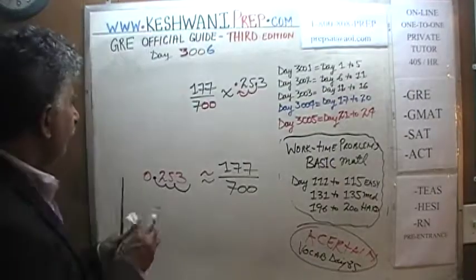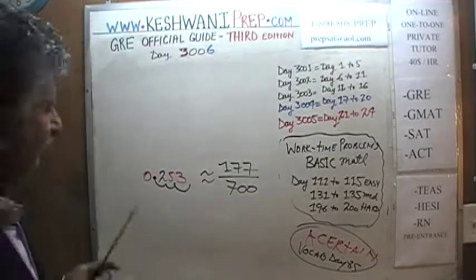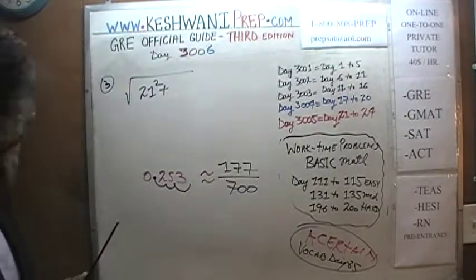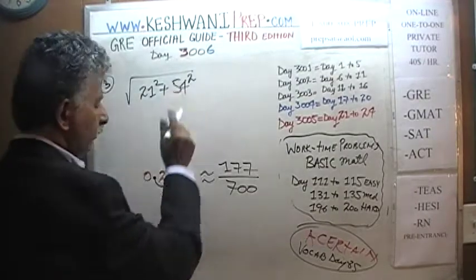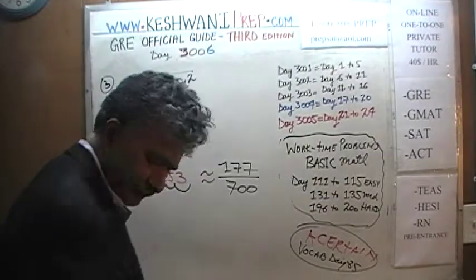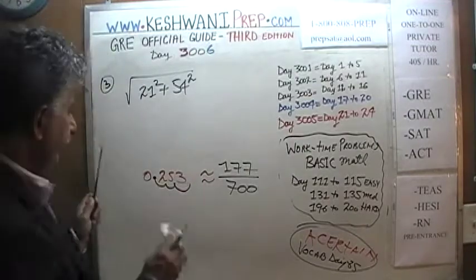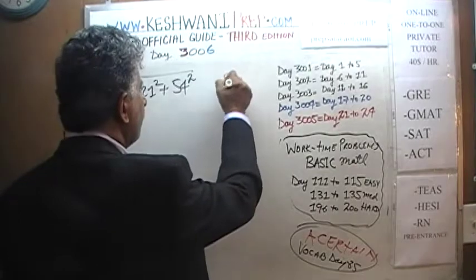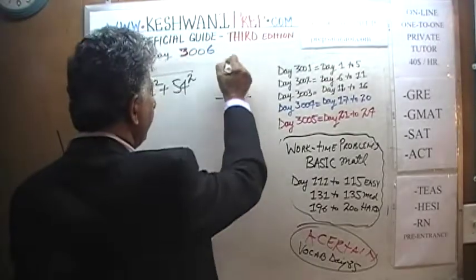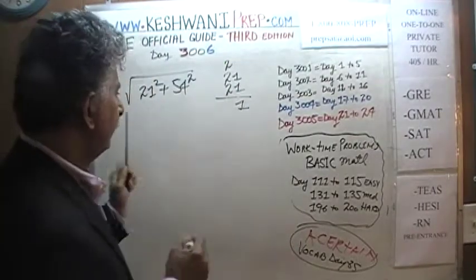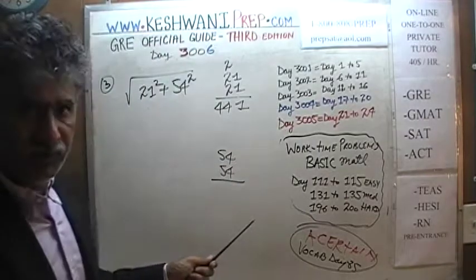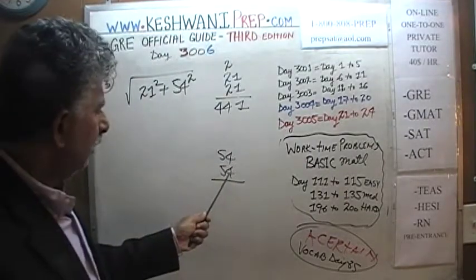Let's carry on. Number 3: they're asking us to find the square root of 21 squared plus 54 squared plus 54 squared. Let's first find out 21 squared on the side. 21 times 1 is 21; 21 times 2 is 42. 42 plus 2 is 44. So 21 squared is 441. Let's figure out 54 squared.